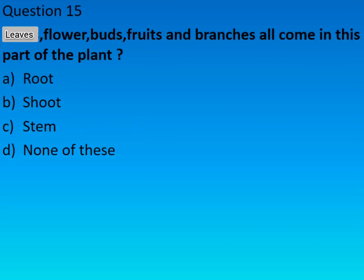Question number fifteen: leaves, flower buds, fruits and branches all come in which part of the plant? The right answer is option B: shoot.